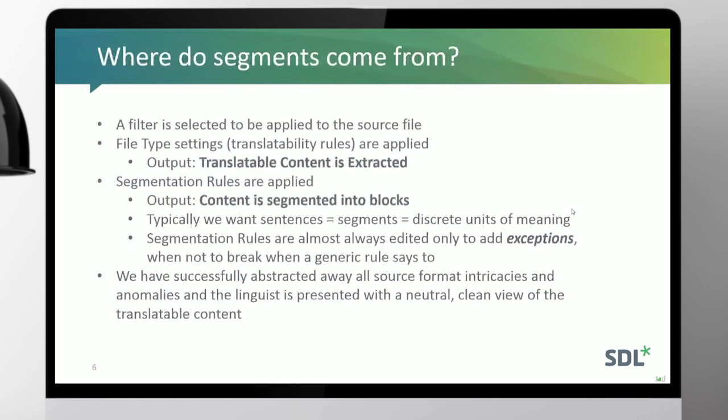Where do segments come from? We apply file type settings to any number of supported source file inputs. From there, translatable content is extracted depending on the translatability rules — that's just a block of translatable text, the entire file as a sequence of paragraphs. At that point we apply segmentation rules, so this big block of content is segmented into smaller blocks. Typically these segments are equivalent to sentences — a sentence being a discrete unit of meaning.